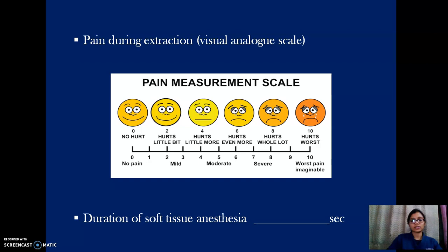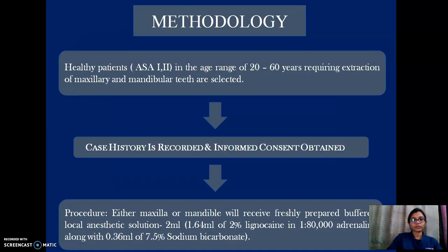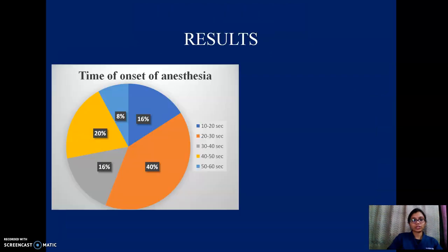After the procedure, pain during injection and pain during extraction were recorded using a visual analog scale. The duration of soft tissue anesthesia was recorded by asking the patient to remain in the observation room until soft tissue anesthesia resolved. Patients were then given post-extraction instructions, prescribed medication, and discharged. This simple protocol was followed for every patient, and results were subjected to statistical analysis.